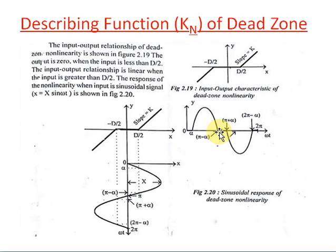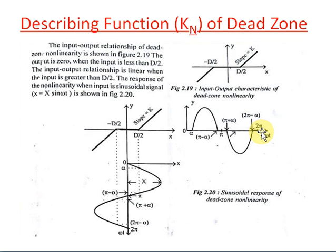From pi minus alpha to pi it is again 0, that is the d/2 region. In the negative half cycle, from pi to pi plus alpha it is again 0 — that is, 0 to minus d/2 is 0. Correspondingly, pi to pi plus alpha is 0. And pi plus alpha to 2pi minus alpha it is again a sinusoidal response. Then 2pi minus alpha to 2pi it is again 0.